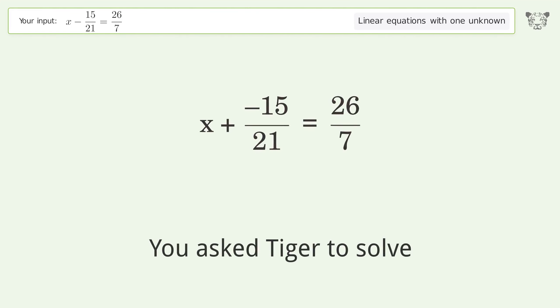You asked Tiger to solve this. This deals with linear equations with one unknown. The final result is x equals 31 over 7.